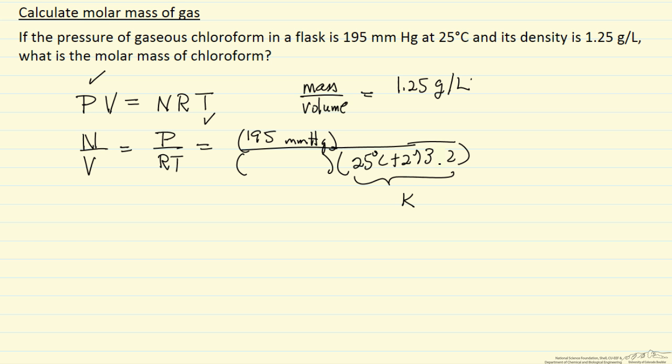So what we want is a gas constant that's going to have units of millimeters of mercury in liters, since our density, mass density is in liters, and then moles per degree Kelvin. So let's look up that gas constant. So here's the value I've looked up for the gas constant. So I'm going to put 62.37 here with the units indicated.